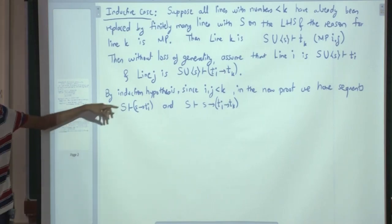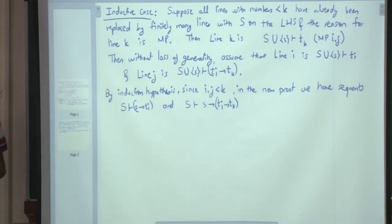and S proves S implies T_I implies T_K. The proof for line I was replaced by finitely many lines. And, the final one of those lines is S proves S implies T_I and this is S proves S implies T_I implies T_K. Now, tell me how to obtain a proof of S implies T_K.